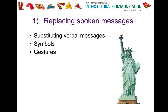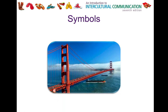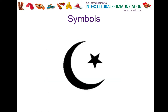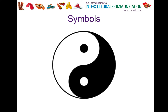Gestures can also replace spoken messages — something as simple as a wave or an OK sign could have meaning. Facial expressions can too. Each country and culture has symbols unique to it: the Golden Gate Bridge represents San Francisco, a crescent and star is a religious symbol of Islam, there's a sports symbol for the Patriots, and the yin and yang symbol represents harmony in Eastern Asian cultures. It's important to recognize that these symbols are culturally relative.